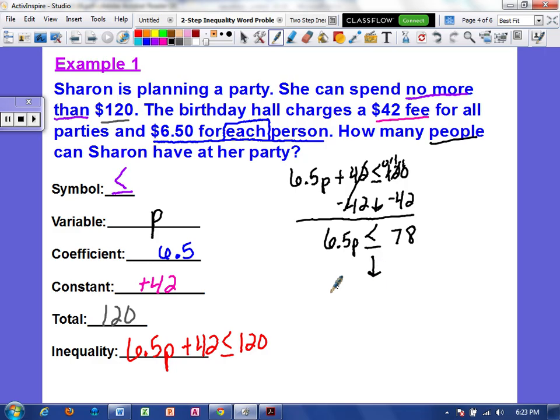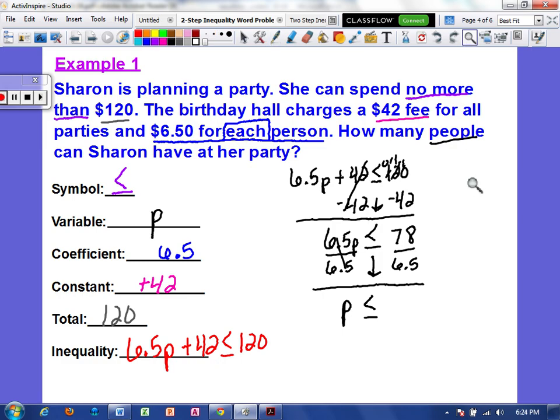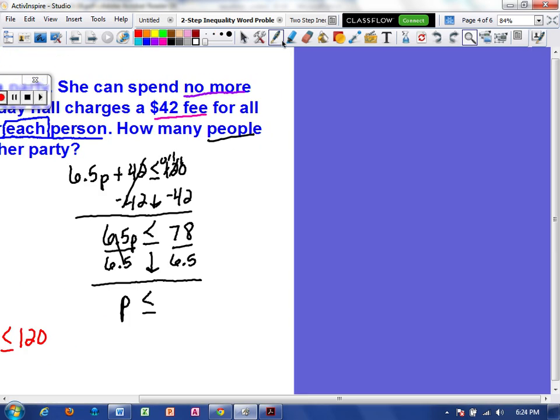So now I'm going to separate the left and right side. So now I have 78 divided by 6.5. So the inverse of multiplying by 6.5 is to divide by 6.5. So I know I'll be left with the letter P. We're dividing by a positive so our symbol stays the same. And now we are going to actually divide this out. And I'm going to come out here to the side to divide that.